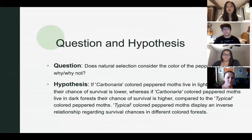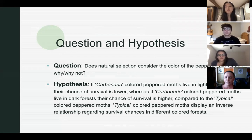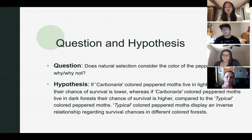For this experiment our question was: does natural selection consider the color of the peppered moths, and why or why not? Our hypothesis is: if carbonaria colored peppered moths live in light forests then their chance of survival is lower, whereas if carbonaria colored peppered moths live in dark forests their chance of survival is higher compared to the typical colored peppered moths. Typical colored peppered moths display an inverse relationship regarding survival chances in different colored forests.